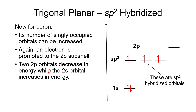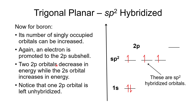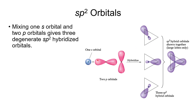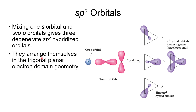For sp2 orbitals, mixing one s orbital and two p orbitals gives three degenerate sp2 hybridized orbitals. They are a little longer and less rounded than sp orbitals. These three orbitals always arrange themselves in the trigonal planar electron domain geometry, with bond angles approximately equal to 120 degrees.